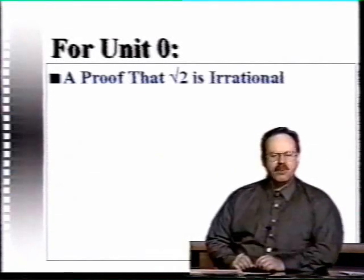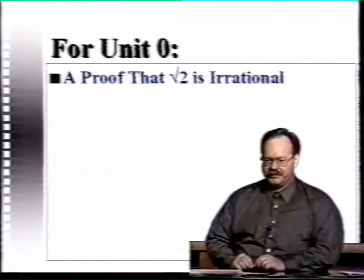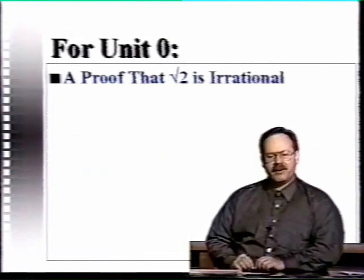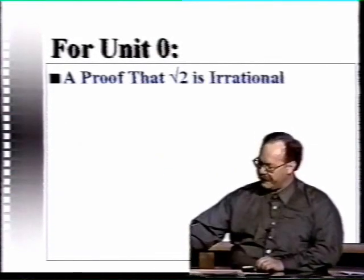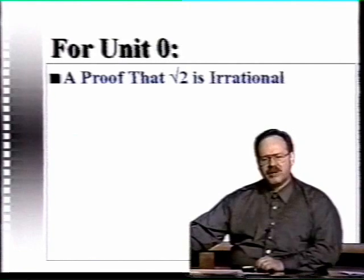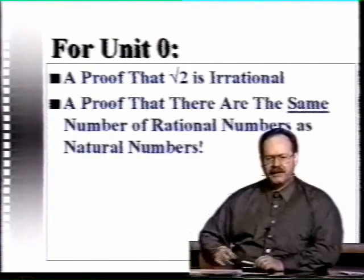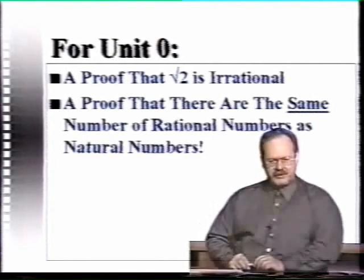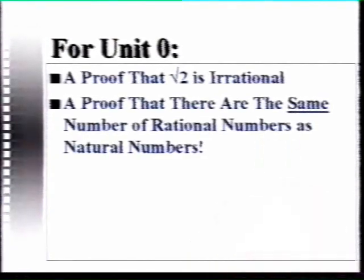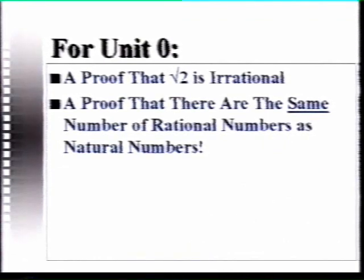Now for a proof that's a bit more unusual, something you may not have thought about before. It's about comparing two infinite sets of numbers. This is going to be a proof that there are the same number of rational numbers as natural numbers.